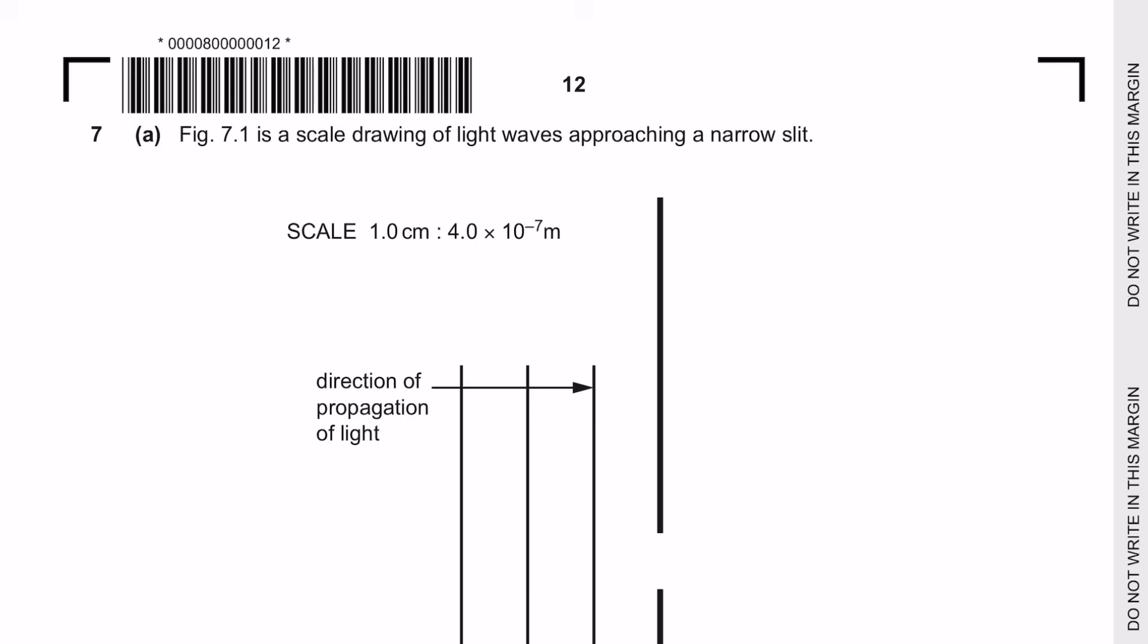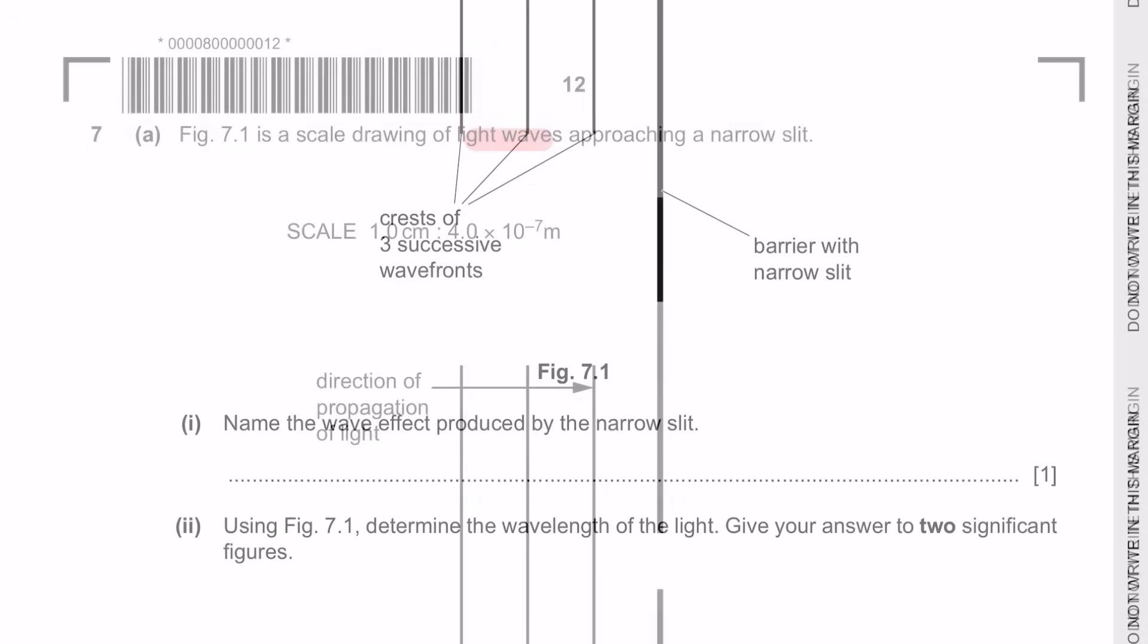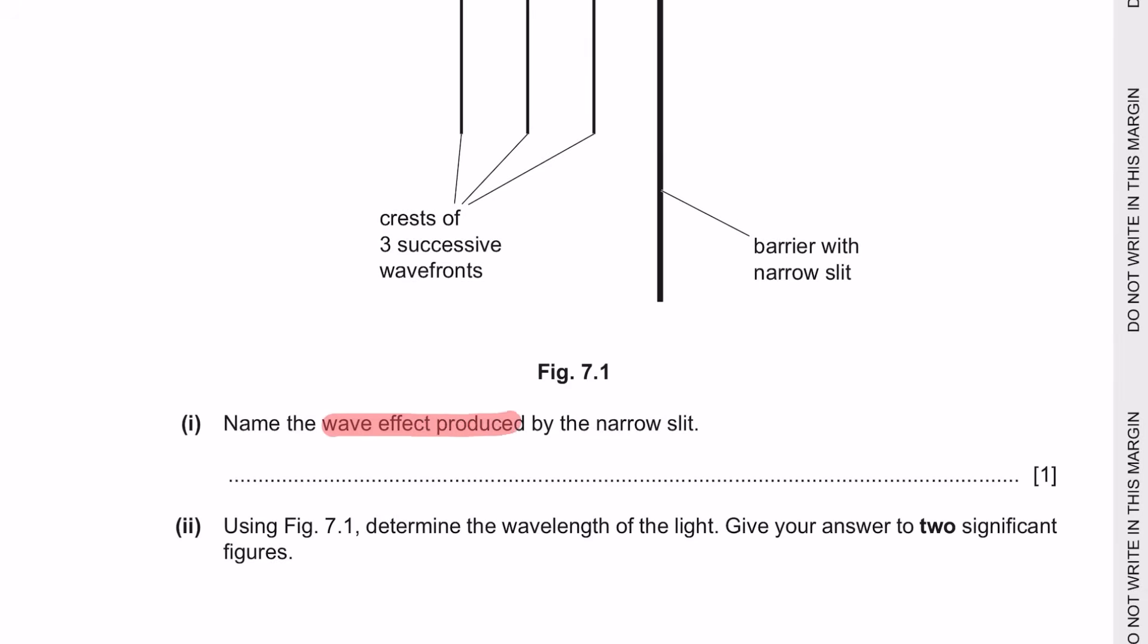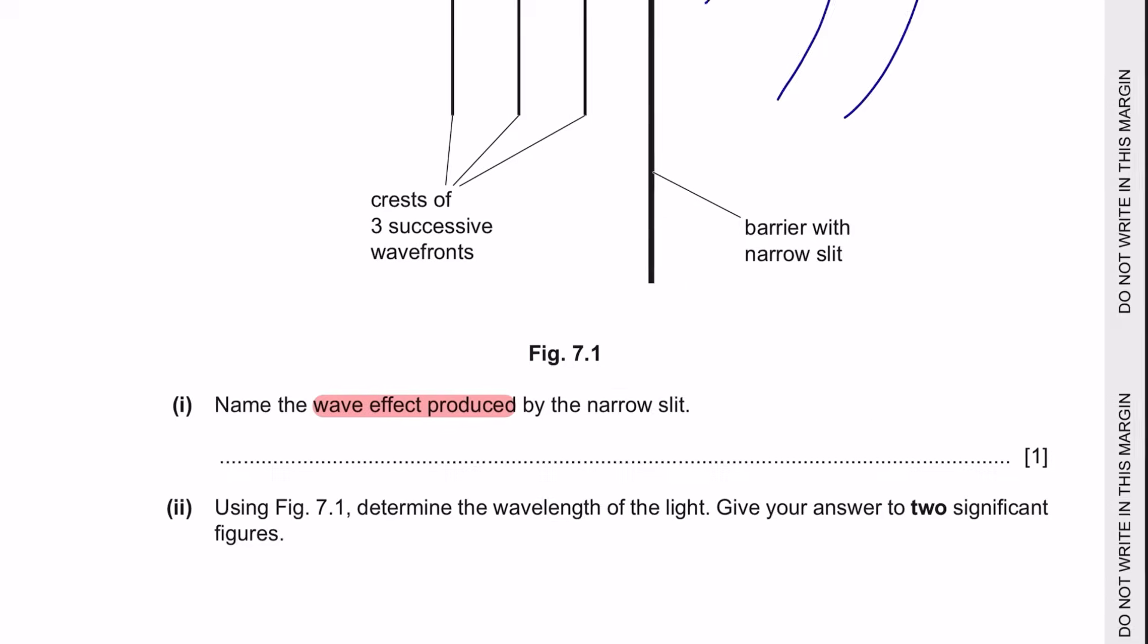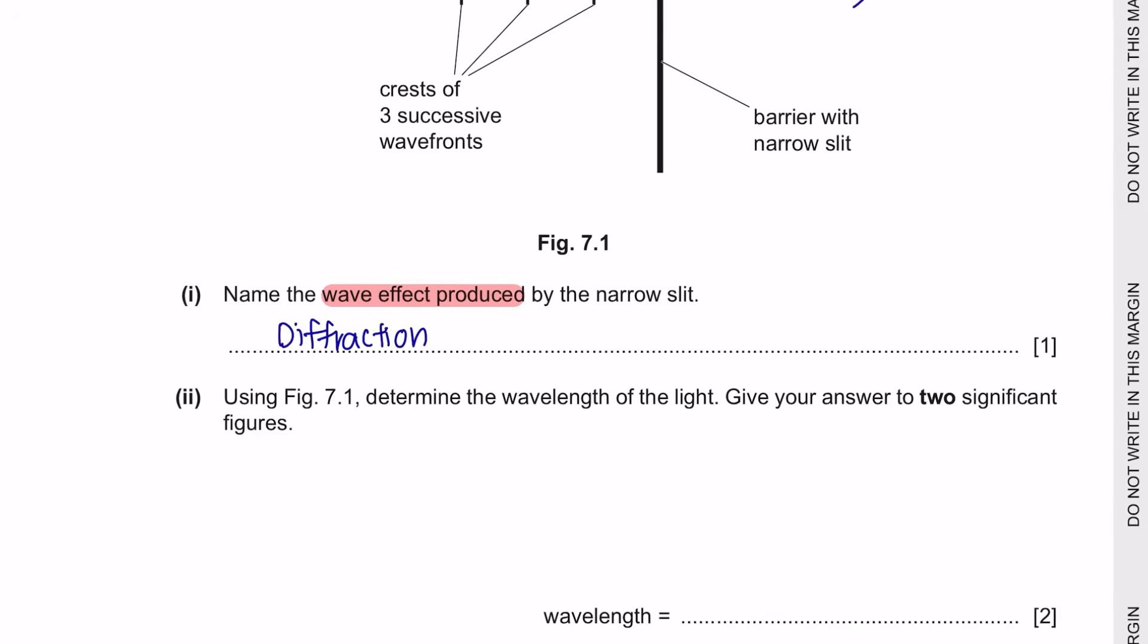Next question seven is from chapter three waves. Figure 7.1 is a scale drawing of light waves approaching a narrow slit. And part one, name the wave effect produced by the narrow slit. Waves passing through a gap will be diffracted as it goes out. So the effect here is called diffraction.